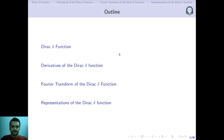This is the plan for this lecture. First I will introduce you to the Dirac delta function along with a brief discussion on its important properties. Then how to find out the derivatives of the Dirac delta function. After that we will try to obtain the Fourier transform of the Dirac delta function and we will end with different representations of this particular function.